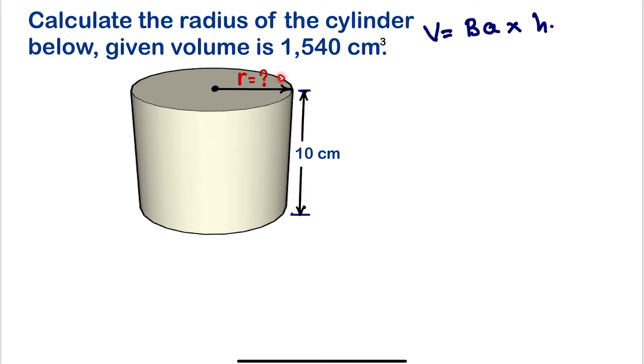Now what is the base of this cylinder? The base is a circle, so we are going to look by the formula of area of a circle, which is πr² times the height. So this is the formula of volume.